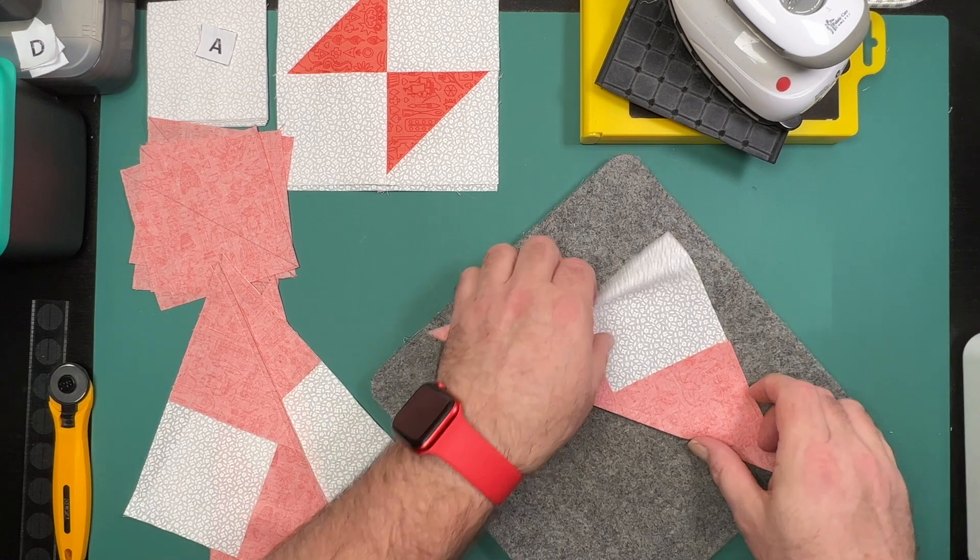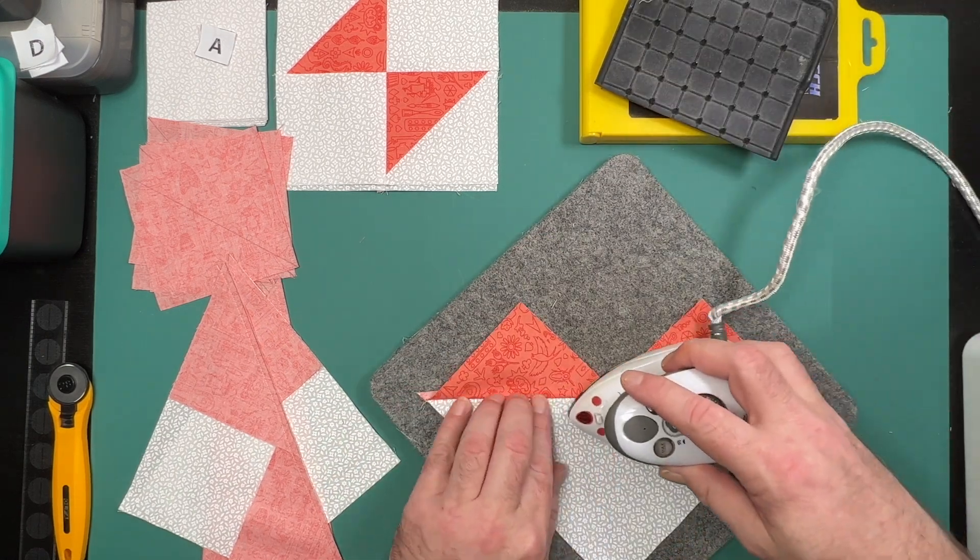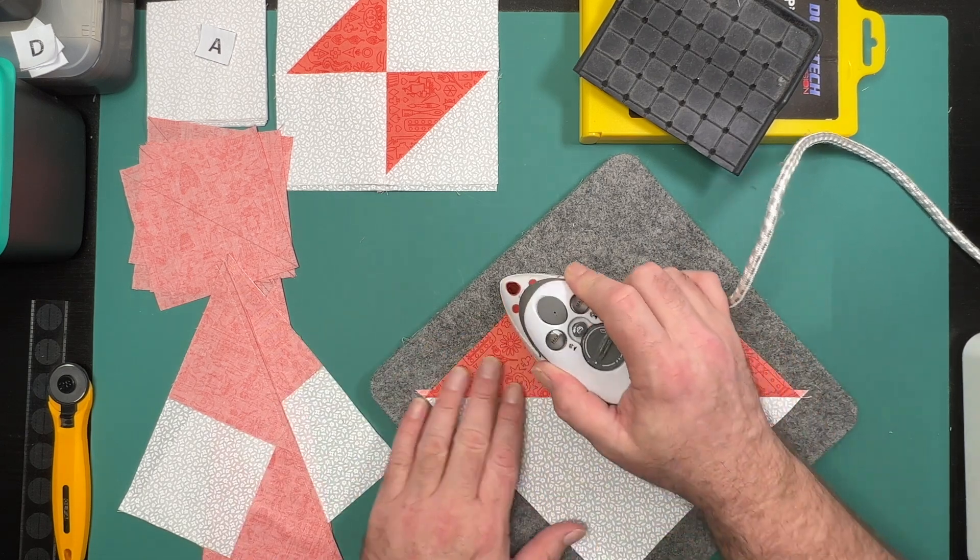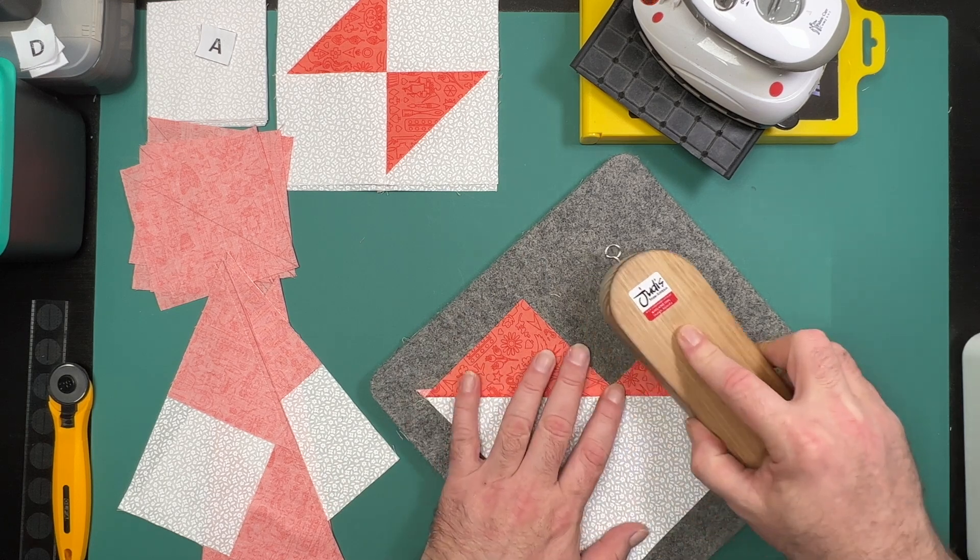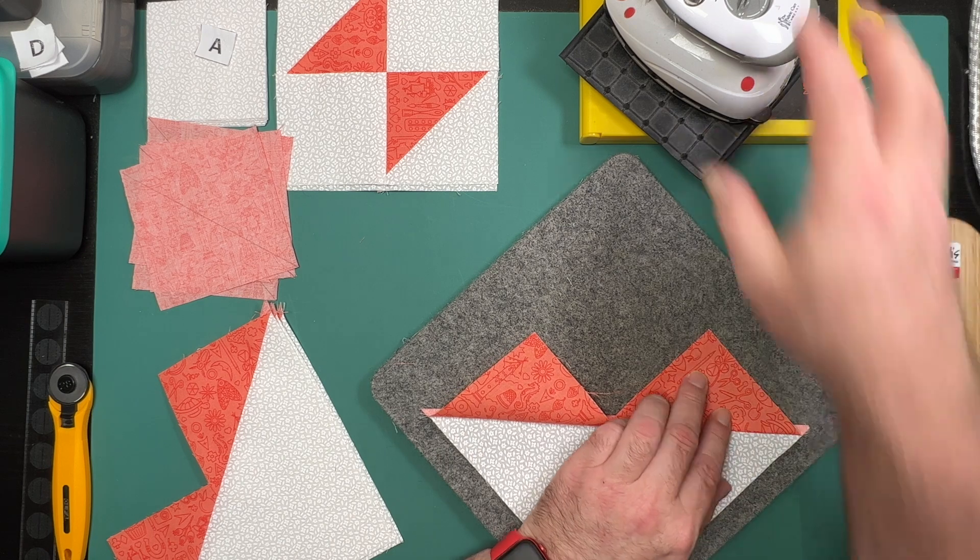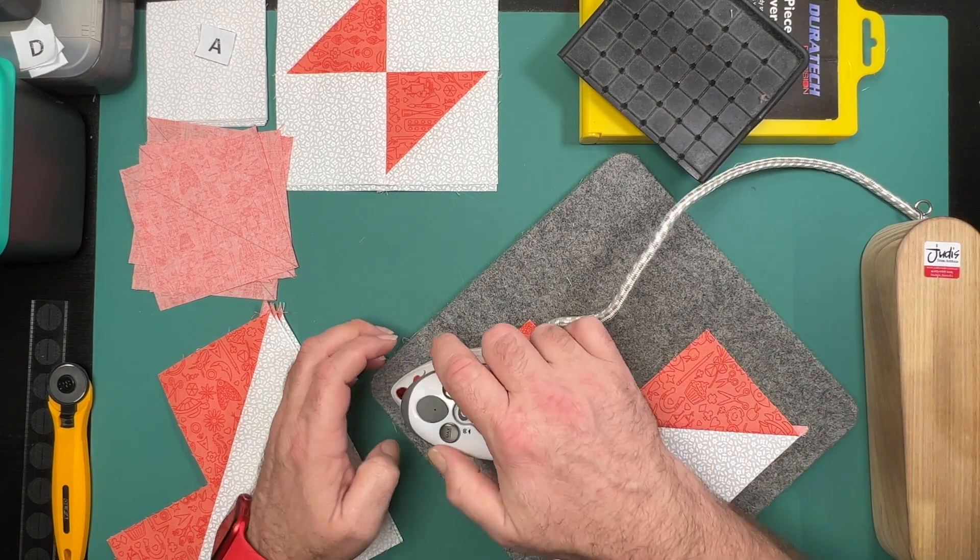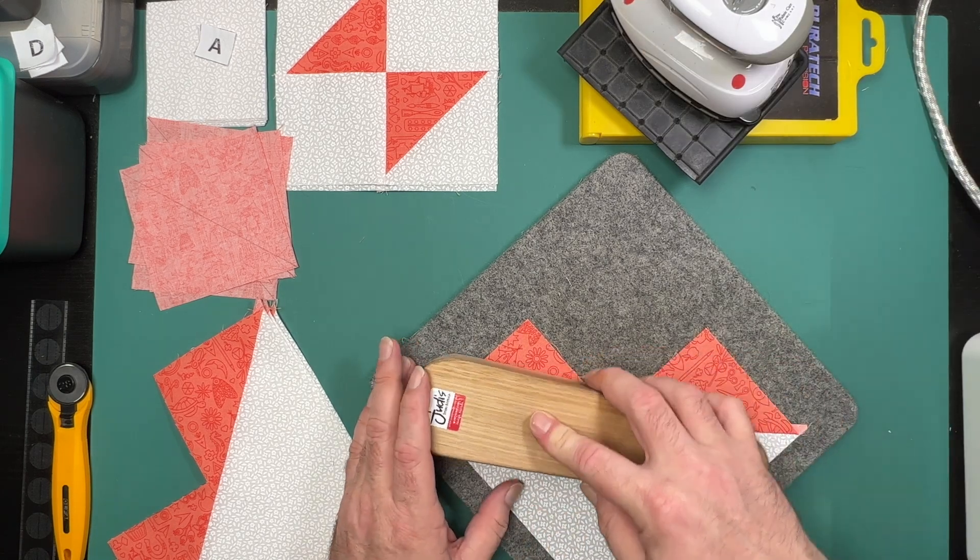In this instance it will look like a love heart or a cat's face, and you have heard me say that before. We'll then take the remaining two squares, or four in this instance because I am making two blocks, and place those once again across our large piece pointing from the two peaks down to the bottom of that large triangle. We'll then take it back to the machine and once again stitch a quarter of an inch on each side of our drawn line.